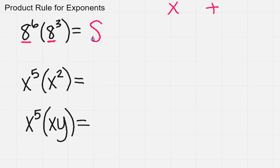So your base stays the same and then I would just take 6 plus 3. So ultimately we'll get 8 to the 9th power.